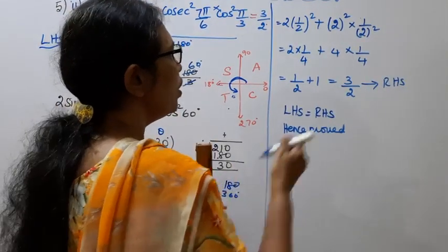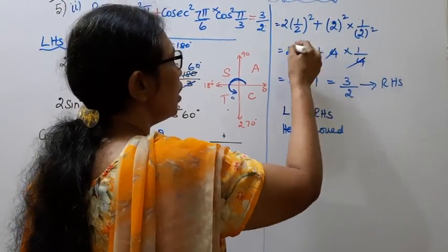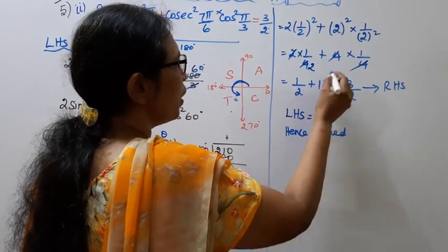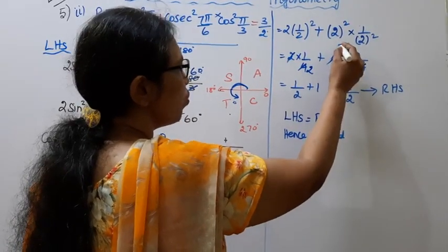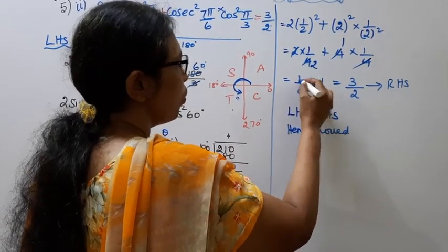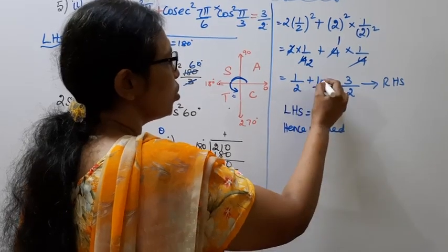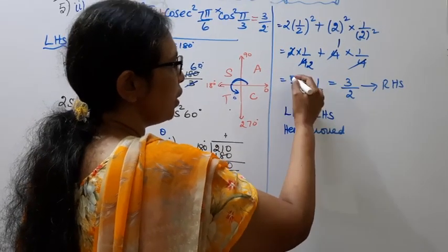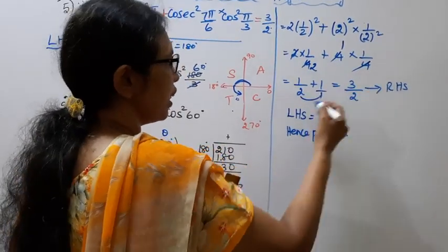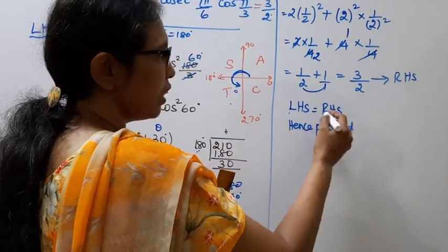2 into 1 by 4 plus 4 into 1 by 4. Simplifying: 1 by 2 plus 1, which equals 3 by 2. So we get 3 by 2, which is the right hand side.